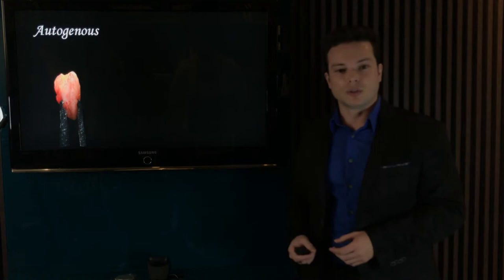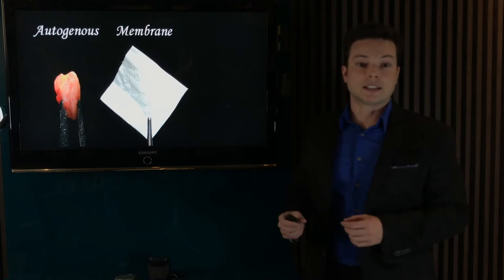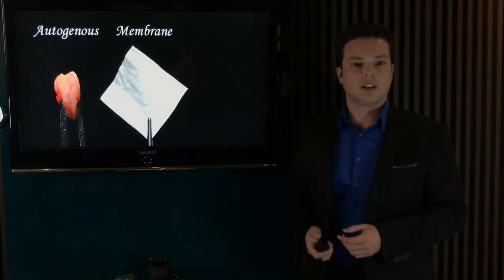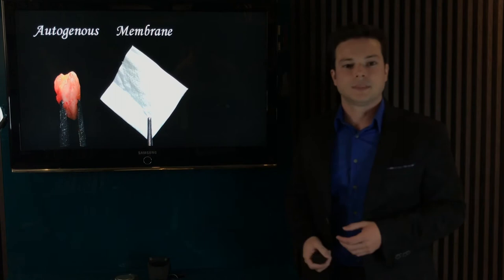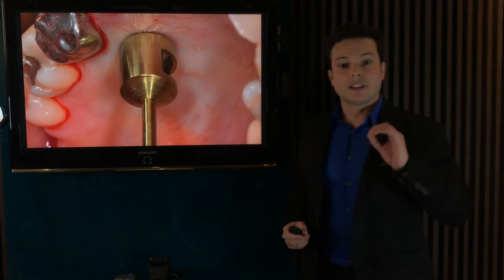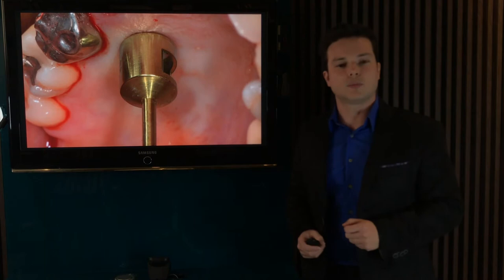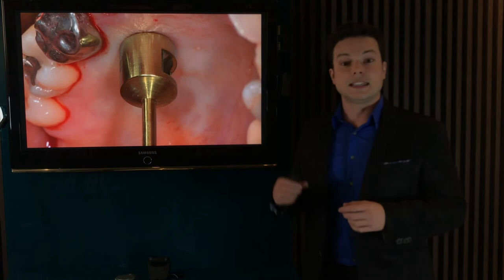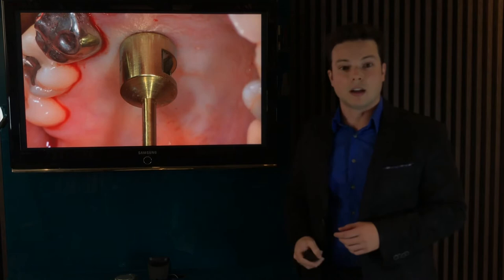First, I would like to highlight autogenous tissues, usually harvested from the palate, and the use of membranes. The soft tissue from the palate is currently the reference standard and probably the most used technique for socket sealing in alveolar ridge preservation. This procedure normally involves an incision in the palatal area, here performed with a punch blade.